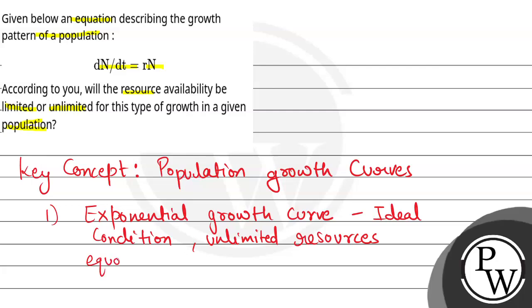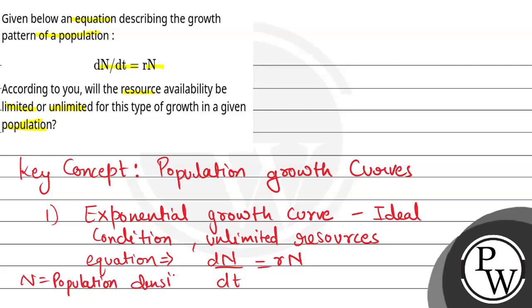The equation which represents this graph is dN by dt, which is equal to rN. Here, dN/dt is the rate of change of population density, N represents the population density, and t represents the time. Since resources are unlimited, the rate of change of population density rises continuously, and this curve becomes a J-shape.